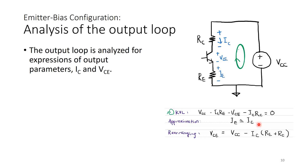Doing KVL around the output loop: VCC − IE·RE − VCE − IC·RC = 0. Since IC ≈ IE (because α ≈ 1 for the BJT), we can approximate IE ≈ IC. Rearranging gives: VCE = VCC − IC·(RE + RC). Some may wonder if we can ignore IB: since IB is in the microamp range and IC is in the milliamp range, IB is negligible in this expression.